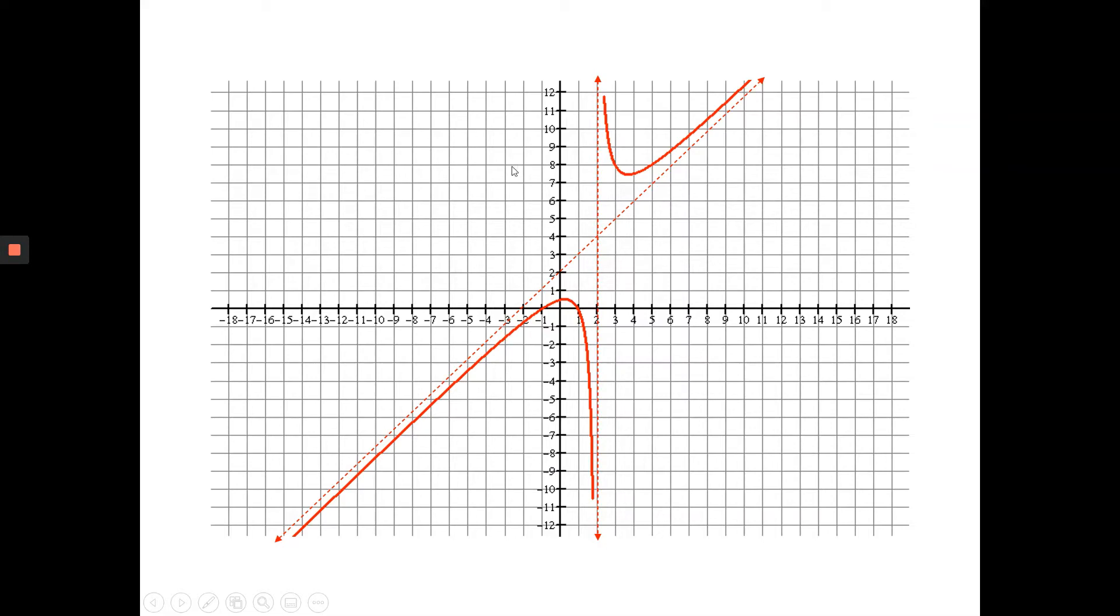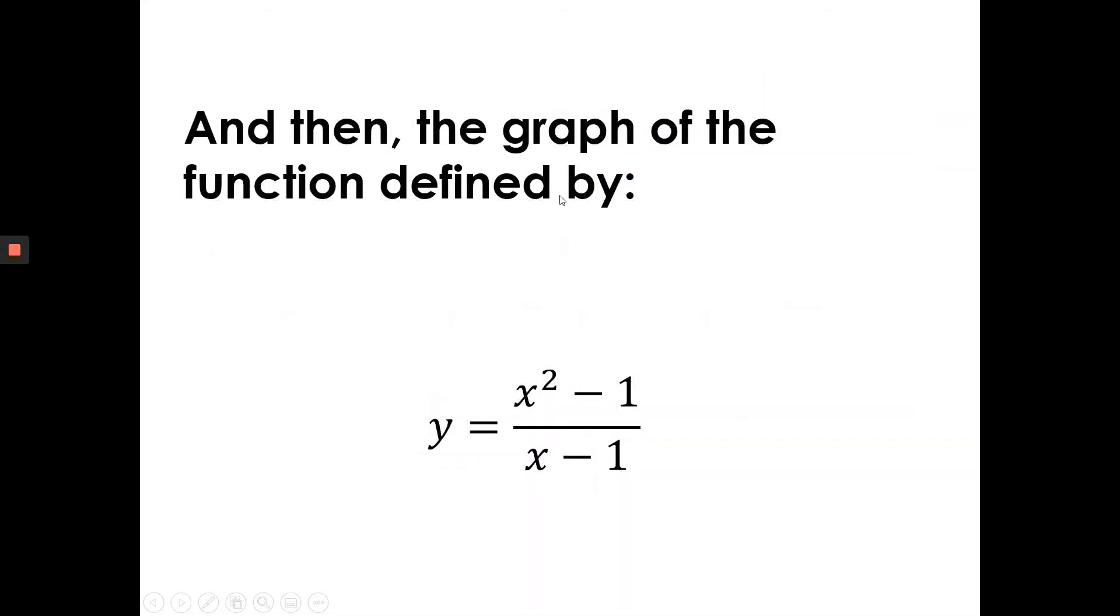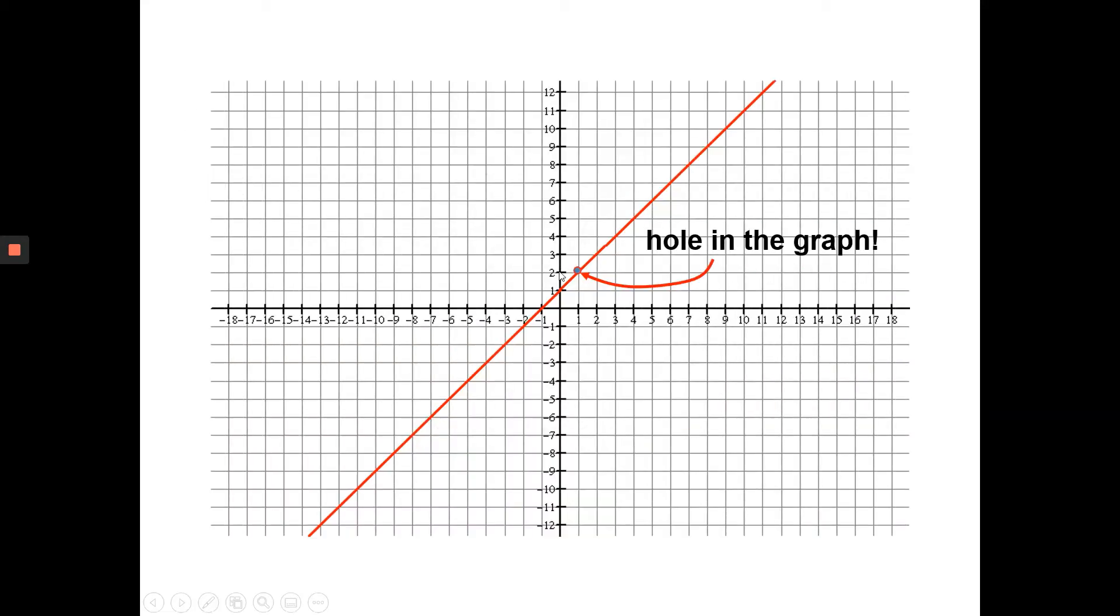But what we're going to do is we're going to take that equation and make a small modification. Okay? The denominator is now no longer x minus 2. It's x minus 1. And when we make that small modification to the denominator, guess what happens? There's a big difference to the graph of the rational function.